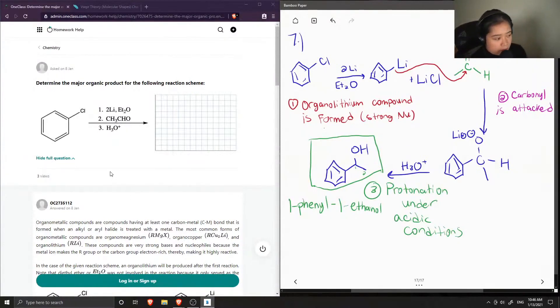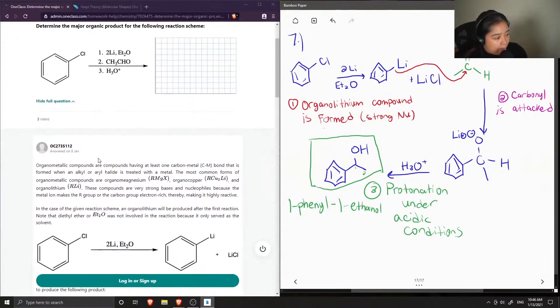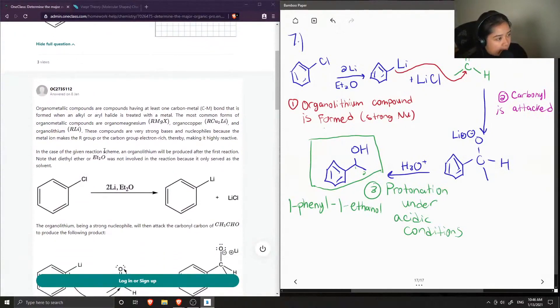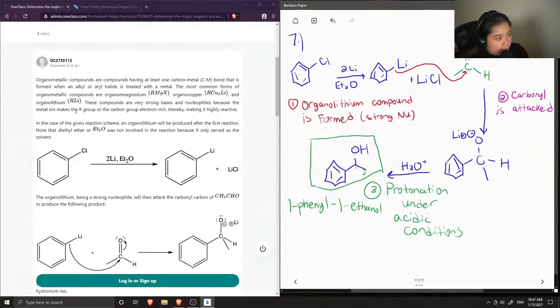And now let's see what the tutor said. Organometallic compounds are compounds having at least one carbon-metal bond that is formed when an alkyl or aryl halide is treated with a metal. The most common forms of organometallic compounds are organomagnesium, organocopper, and organolithium. These compounds are very strong bases and nucleophiles because the metal ion makes the R group, or the carbon group, electron rich, thereby making it highly reactive.